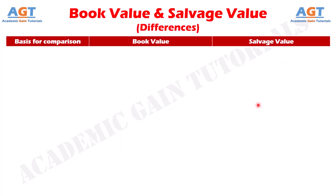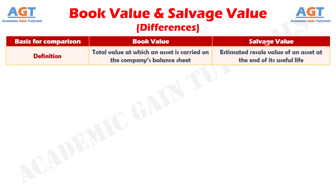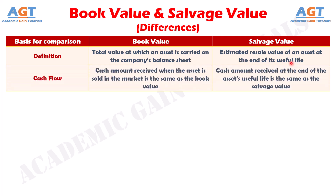Let's look into the basic differences between book value and salvage value in a tabular form. Difference number one: the book value is defined as the total value at which an asset is carried on the company's balance sheet, whereas the salvage value is defined as the total estimated resale value of an asset at the end of its useful life. Number two: in the case of book value, the cash amount received when the asset gets sold in the market is the same as the book value, whereas in the case of salvage value, the cash amount received at the end of the useful life of an asset is the same as the salvage value.